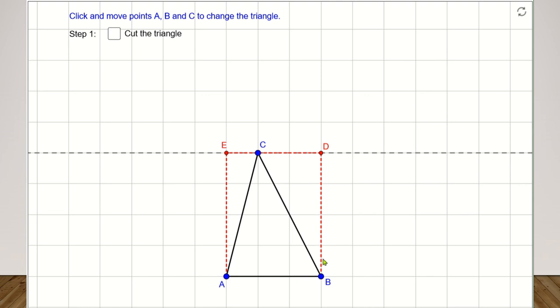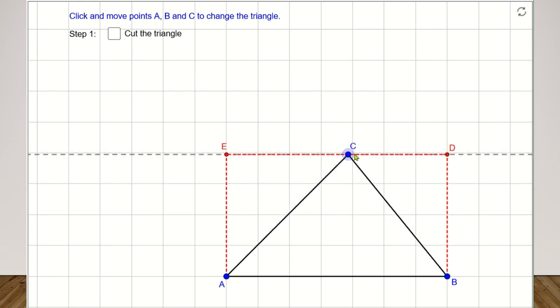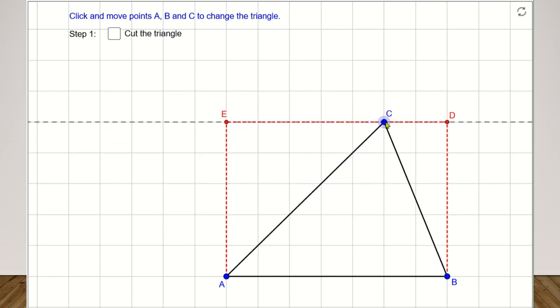From here, you can click and move points A, B and C to change the triangle. Then, go through the 5 steps again.